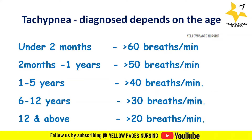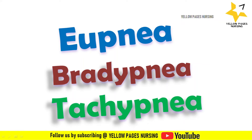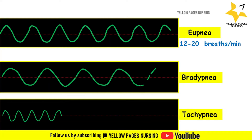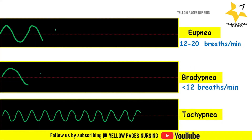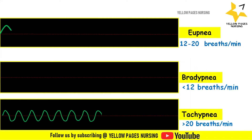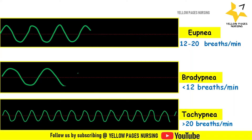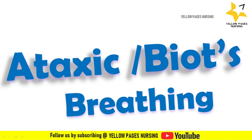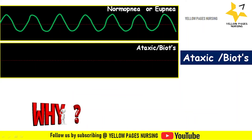Here is a comparison of the graphical patterns of eupnea, bradypnea, and tachypnea. In eupnea, breathing ranges between 12 to 20 breaths per minute; in bradypnea, it is less than 12; and in tachypnea, more than 20 breaths per minute.